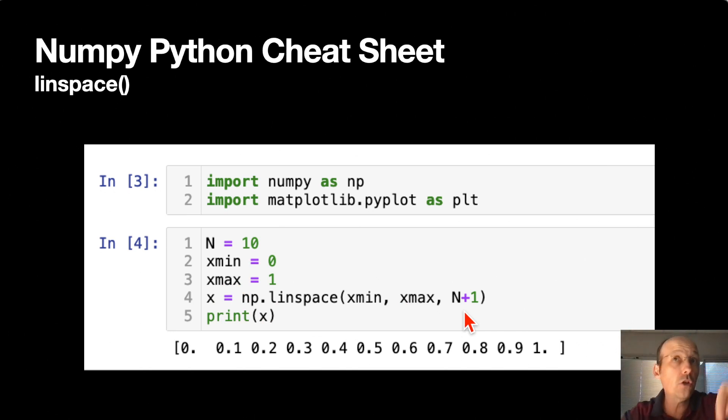If I do N plus 1, it includes this number 0 and goes up to the last one, 1, and it's going to be evenly spaced. If you don't do that, this one's going to be 1 and that's going to be 0, but you're only going to have a total of 9 spots. So these are going to be weird numbers. It still works, but just think about what you do.